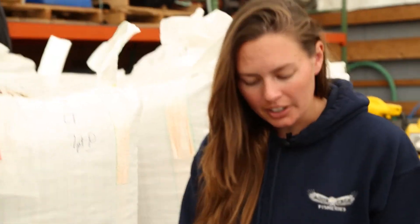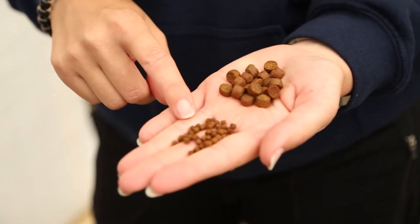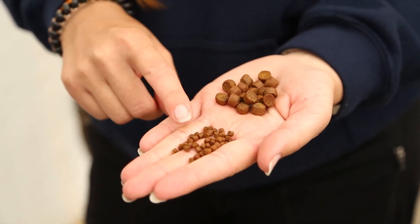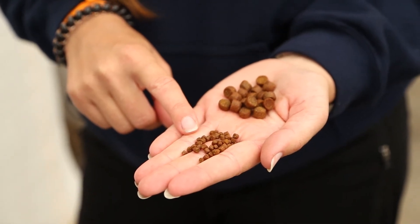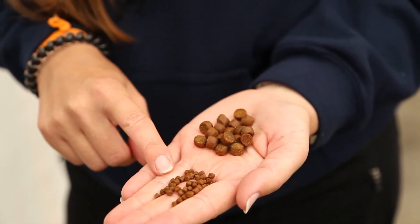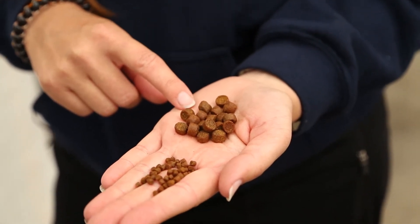You can see here, this is a 7 millimeter pellet or 7 PT pellet and this is a 3 PT pellet. This pellet would be fed to new fingerlings coming onto the farm and it is not pigmented. This pellet is a pigmented pellet fed to our biggest fish before they're harvested.